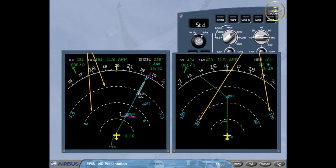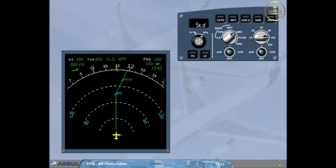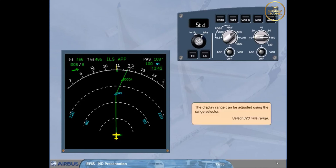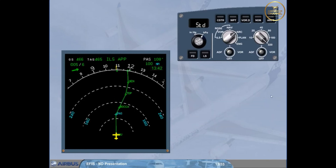The display range can be adjusted using the range selector. Select 320 mile range. You can now see more of your flight plan and that the range values have changed accordingly. Let's study the ND individual modes.